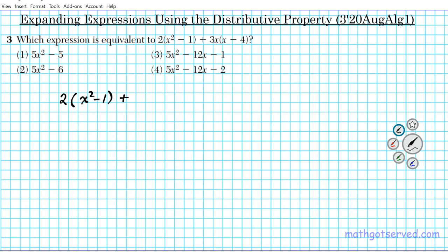Question three reads: which expression is equivalent to 2(x² − 1) + 3x(x − 4)? One thing to keep in mind: anytime you're applying the distributive property, use an arrow to make sure you don't forget any term when distributing. The 2 on the outside multiplies the quantity, and then 3x is distributed to both x and negative 4.